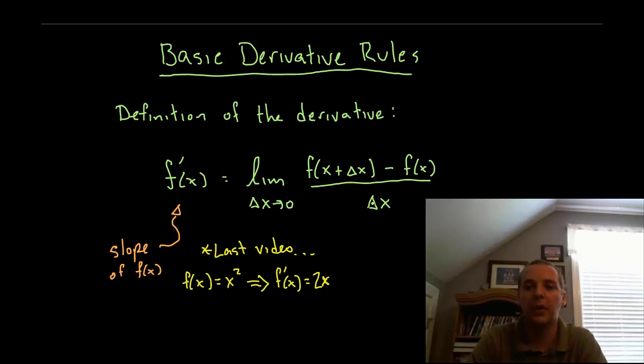The f of x plus delta x minus f of x, that gives you the change in height from one point to a later point. And then delta x stands for the change in x. So in effect you have a rise over the run.